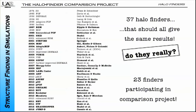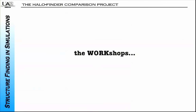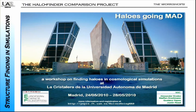23 of them participated when we called for participants. We contacted every living person on this list and asked them, would you be interested to participate in the comparison project? And 23 or 24 replied and said yes. So we started organizing workshops. The first workshop took place in 2010—that's why it's called 'halos going wild.'